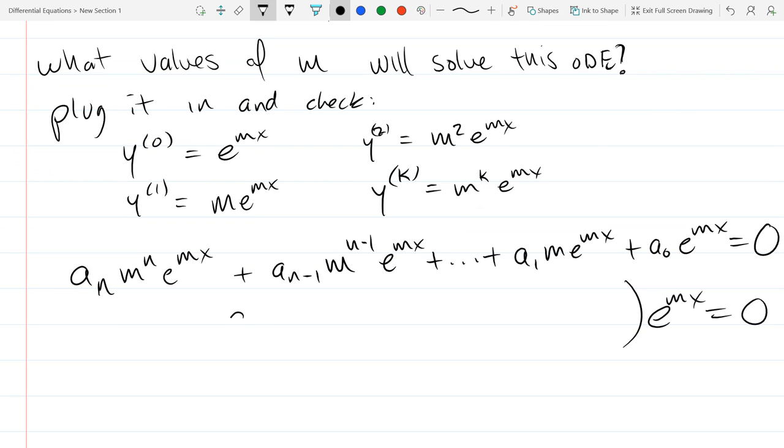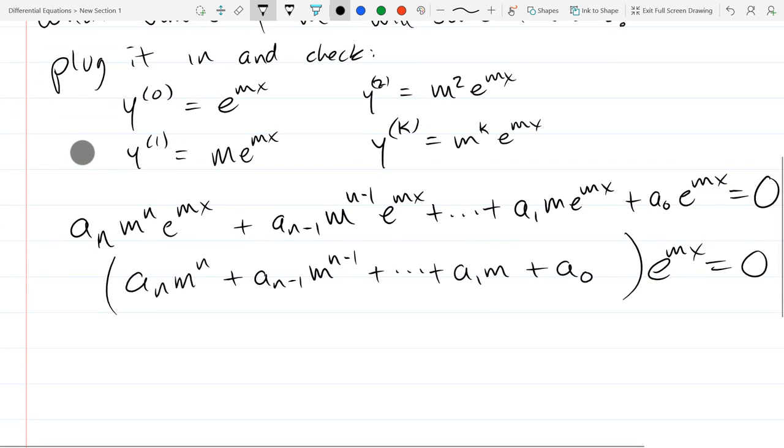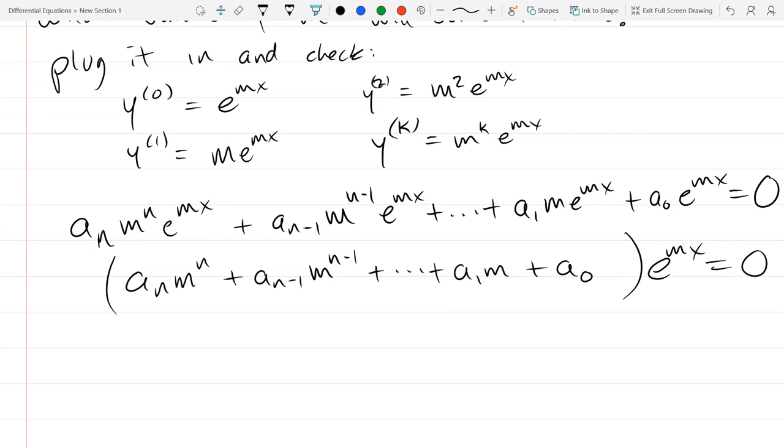How do I figure out what m values would solve this? What algebra move can I make? Factor e to the mx out, definitely. And we're left with an m to the n plus an minus 1 m n minus 1 plus stuff plus a1m plus a0. All right. Zero product property. We just showed, I think, last two classes ago, e to the mx never zero. Even for complex numbers. Never zero.